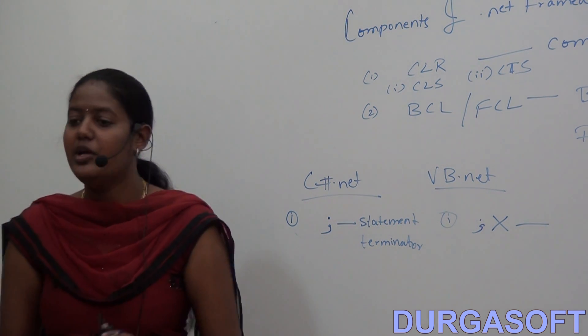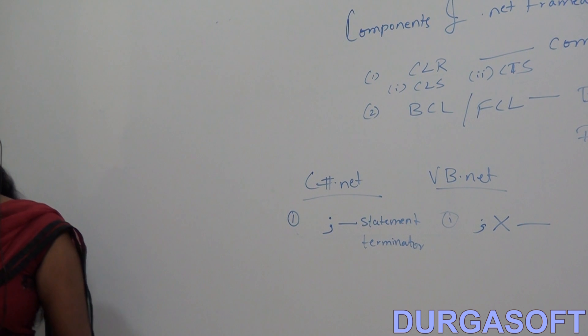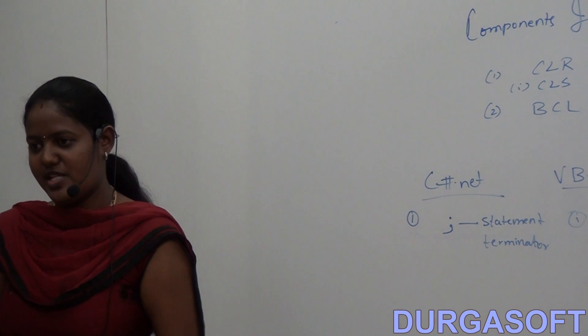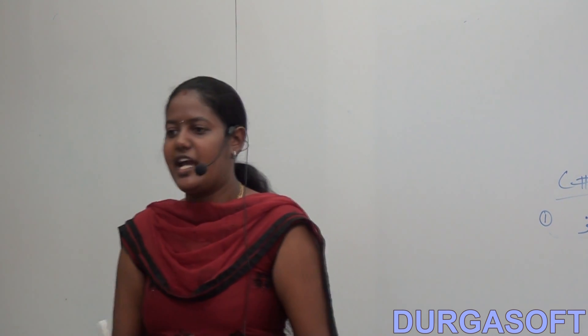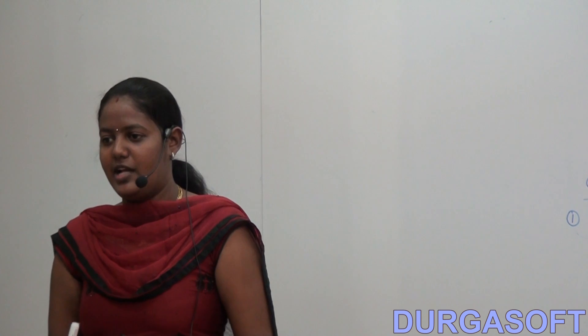CLR can understand all language syntaxes because it has its own language specification. Whatever the language, each one is converted into Intermediate Language by the respective compiler. For example, if you use C# .NET, the CSC compiler converts C# code into Intermediate Language. That Intermediate Language is the same for all languages and is understandable by the CLR.